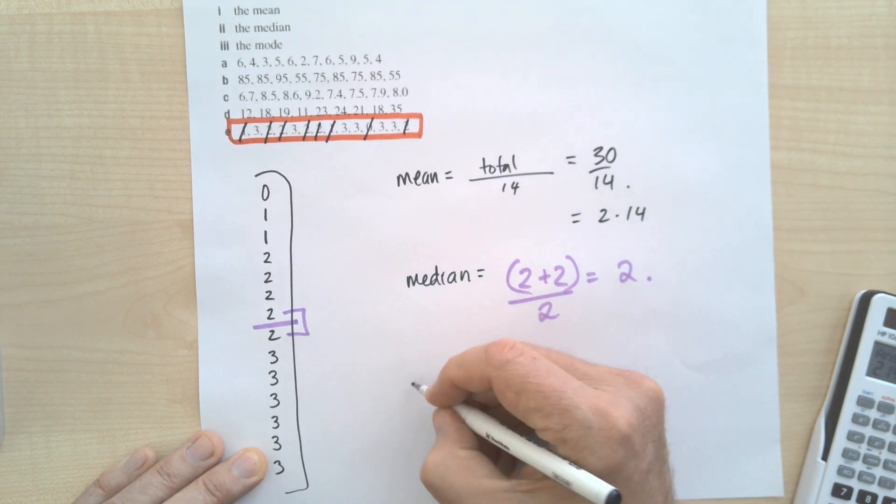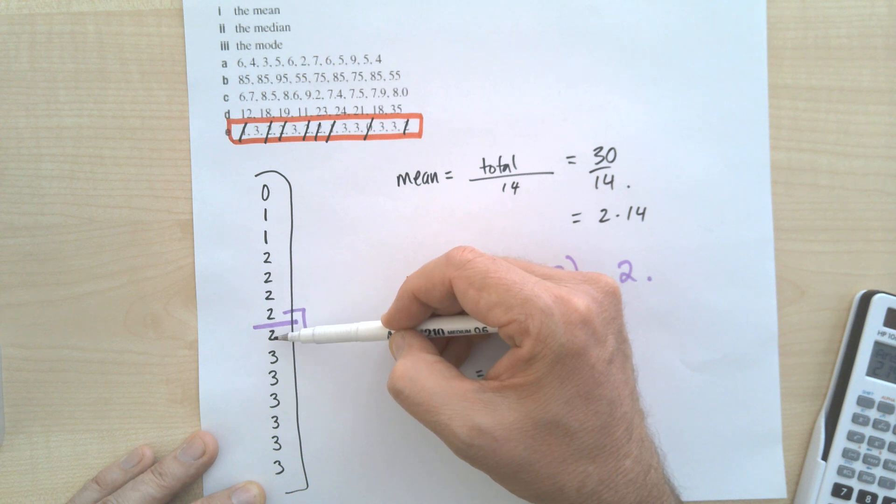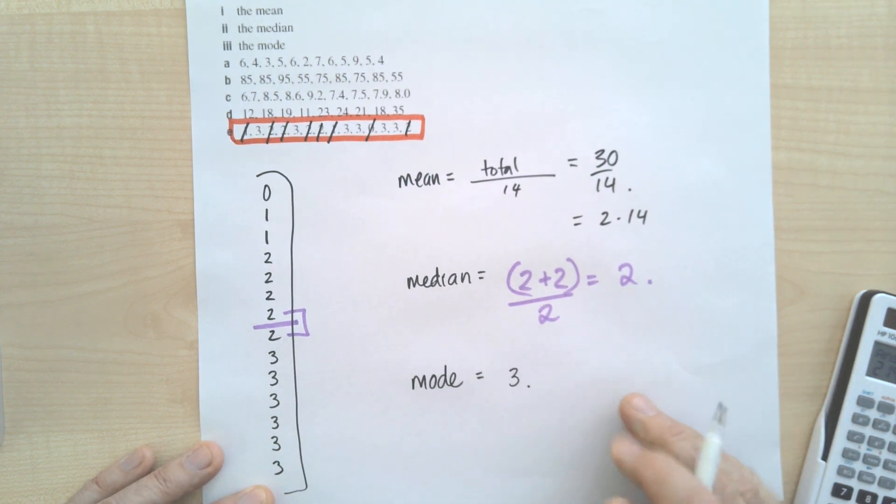The mode. Simplest one of all. What have we got? One, two, three, four, five twos. But we've got six threes. So the mode is three, because it occurs six times.